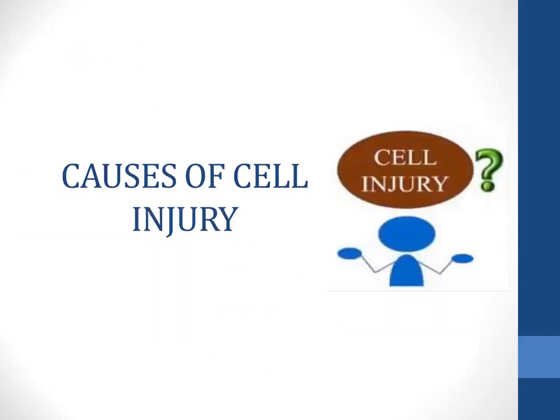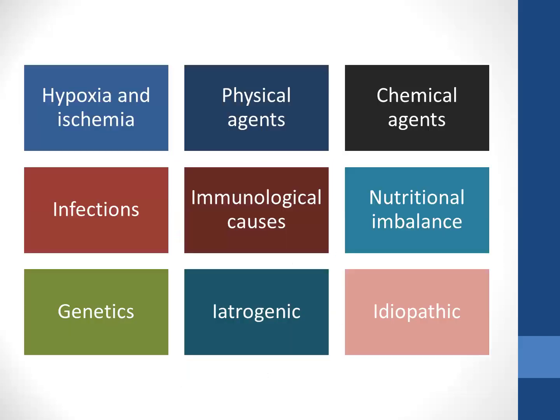What are the different causes of cell injury? It can be because of hypoxia, ischemia, physical agents, chemical agents, infections, immunological causes, nutritional imbalance, and genetic mutations. It can also be iatrogenic or idiopathic.